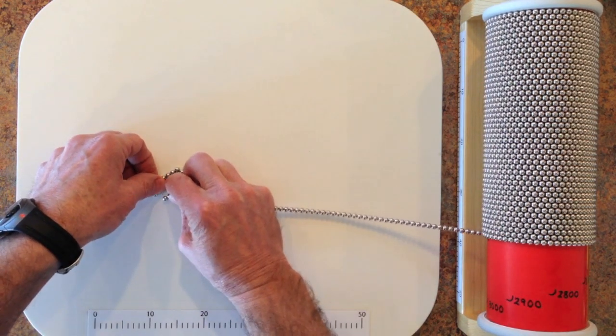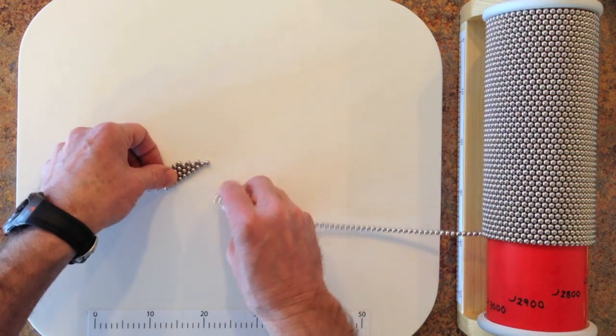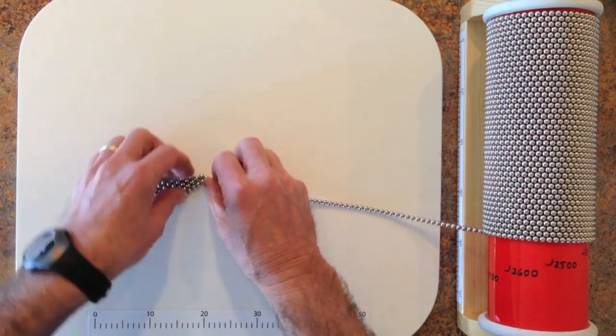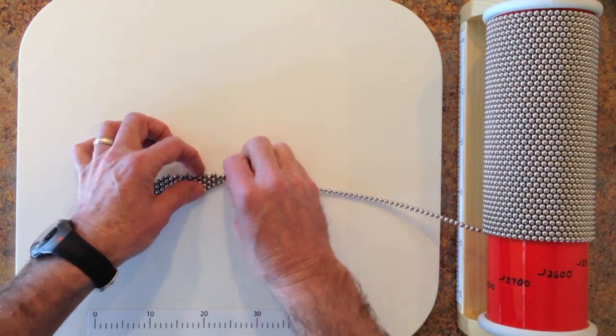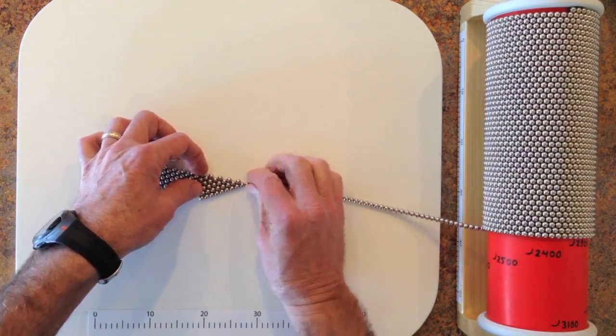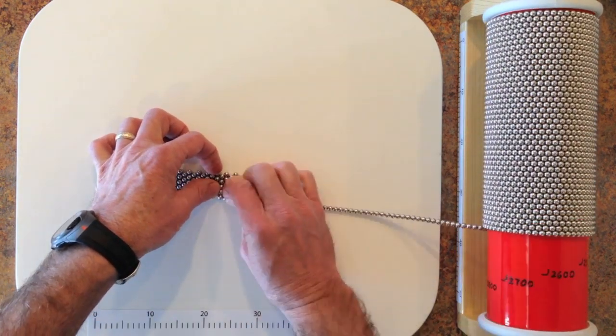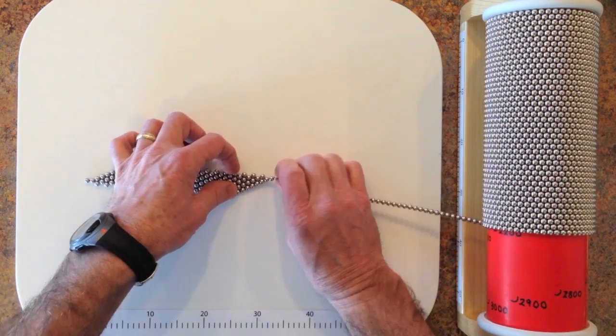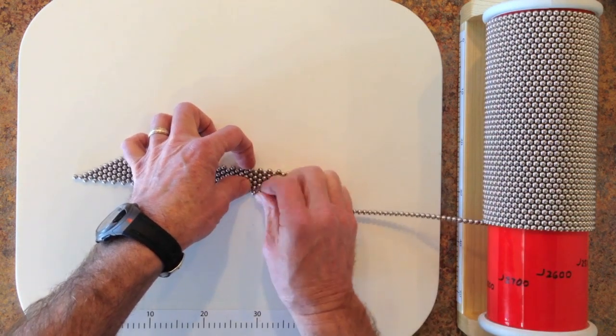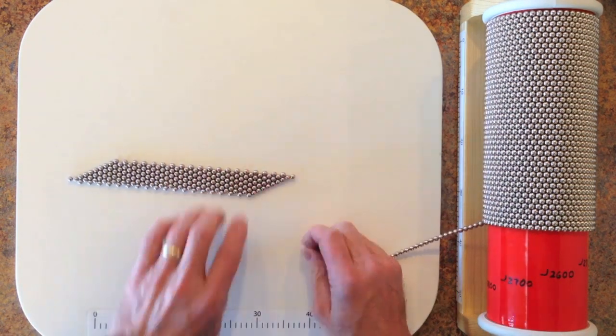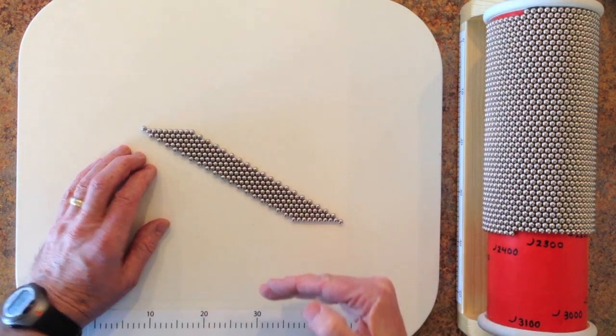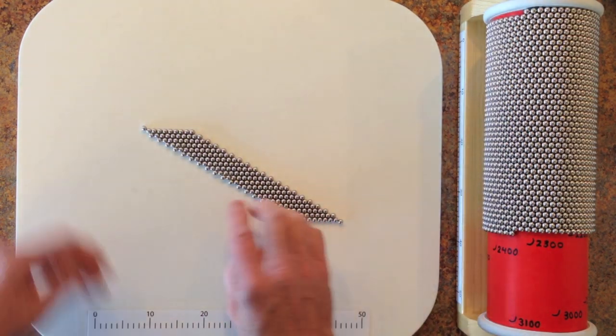That's 3, 4. So here we have the 20 chains, each with 10 magnets.